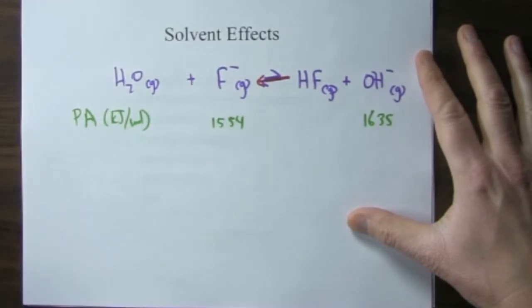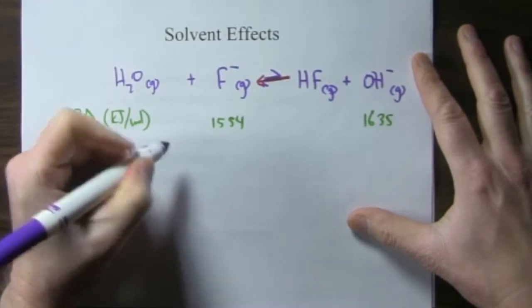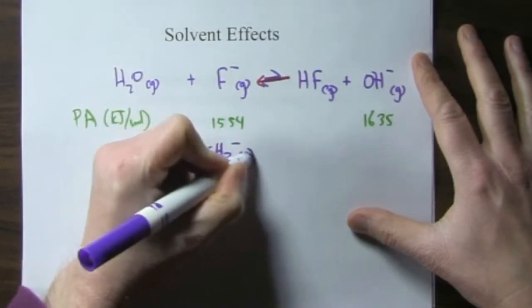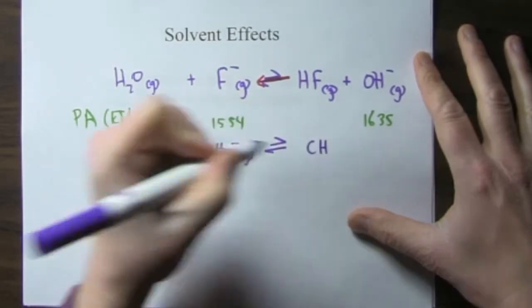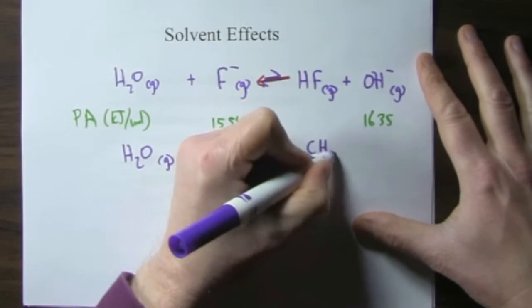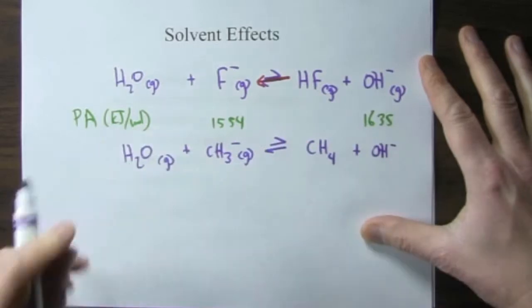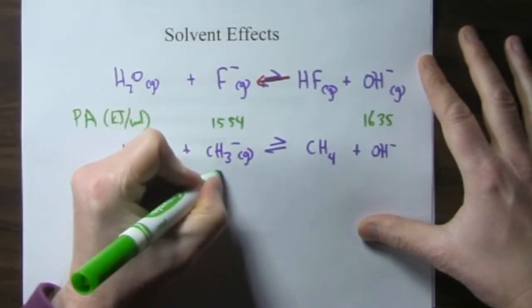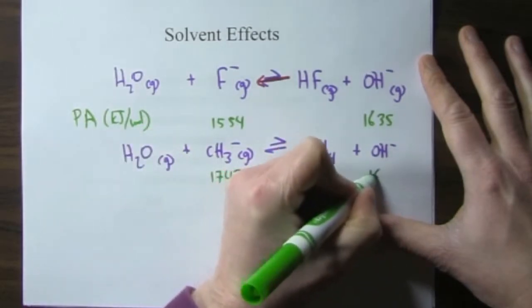If we have a stronger base, let's say we bring along some methide. Is that going to form methane and hydroxide? And you should know from experience that, yes, it's going to react because the proton affinity for methide is greater than, again, the proton affinity for the hydroxide.